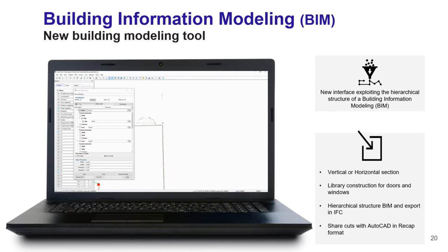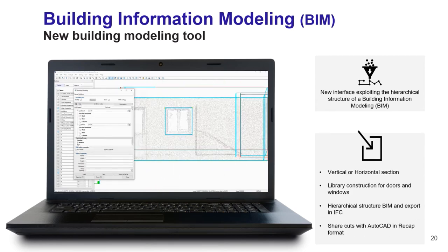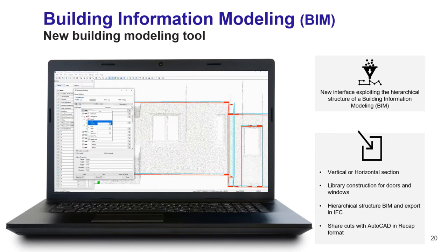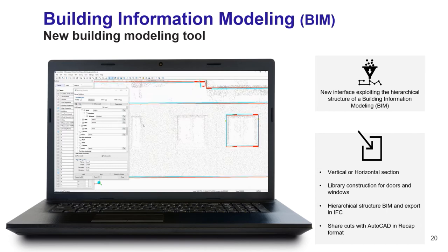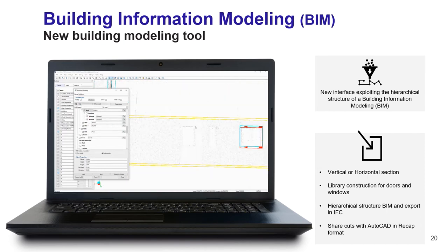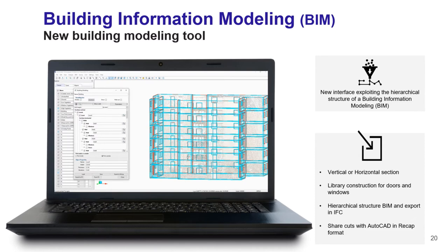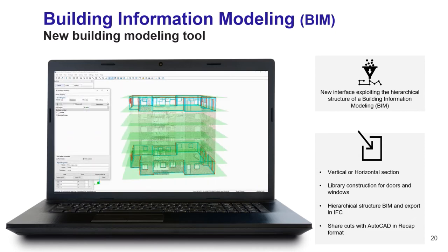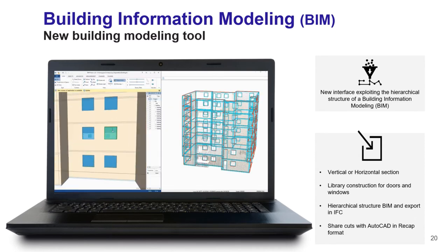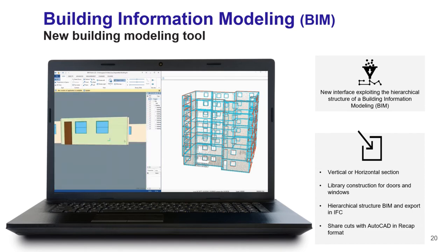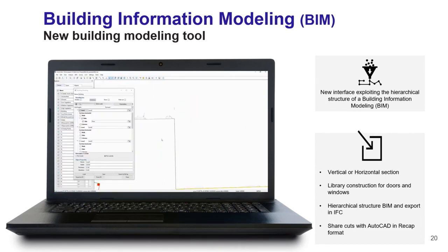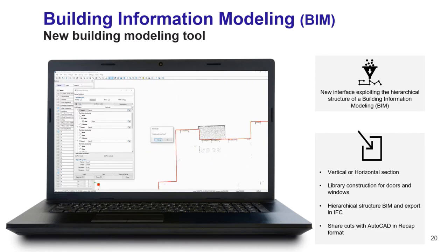Vision LiDAR also includes a BIM module that follows the hierarchical structure of an IFC for building modernization. In the BIM module, you can create vertical and horizontal sections and build libraries of objects for doors, windows, and openings, which can be reused in different projects. Since it follows the IFC hierarchical structure, it is compatible with software such as Revit to complement your BIM creation.